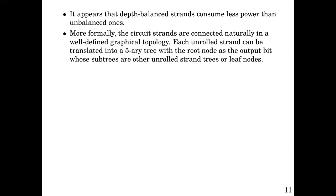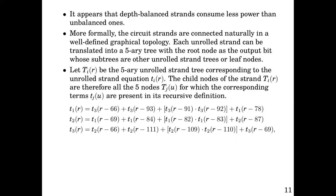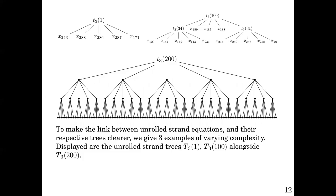More formally, the circuit strands are connected naturally in a well-defined graphical topology. Each unrolled strand can be translated into a 5-ary tree with the root node as the output bit, whose subtrees are other unrolled strand trees or leaf nodes. Let capital T i of r be the 5-ary unrolled strand tree corresponding to the unrolled strand equation T i of r. The child nodes of the strand capital T i of r are therefore all the 5 nodes capital T j of u, for which the corresponding terms T j of u are present in its recursive definition from before. To make the link between unrolled strand equations and their respective trees clear, we give three examples of varying complexity. Displayed are the unrolled strand trees capital T i of 1, capital T i of 100, and capital T i of 200.